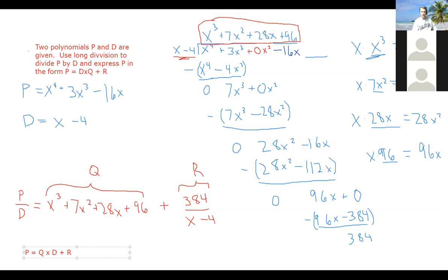Okay, so in this question, they ask us to give the solution like this. They say, answer it like so, P is equal to Q times D plus R. So for us, all we're going to do is we're going to take this Q and write it like so. We'll take that x cubed plus 7x squared plus 28x plus 96 and write that all in parentheses. We're going to multiply it by D. So x minus 4 goes here. This is our Q times D. And then plus our remainder, which is 384. And this is how we should write that out.